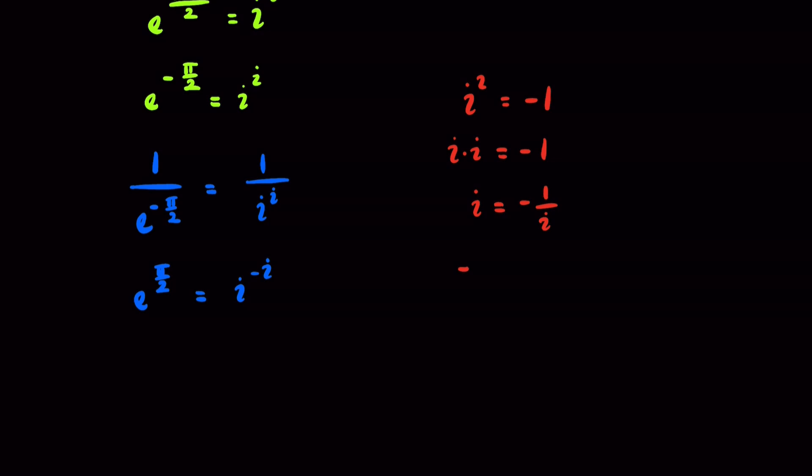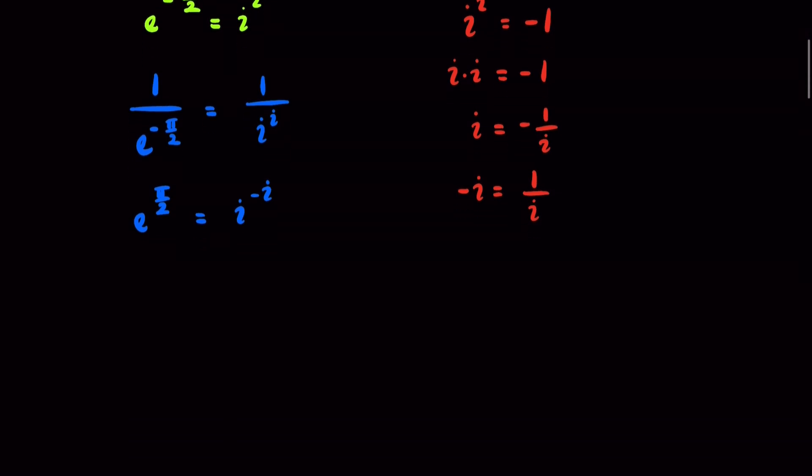And so, that means negative i is equal to 1 over i, which is quite a profound result in and of itself because the reciprocal of i is equal to negative i. And so, now we can plug this back in to our result here. And so, we have e to the pi over 2 is equal to i to the power of 1 over i.